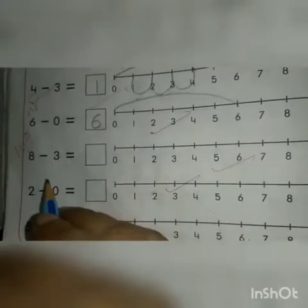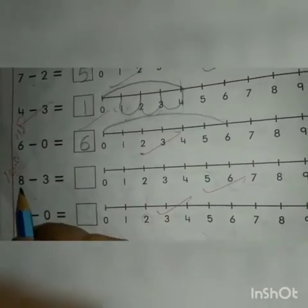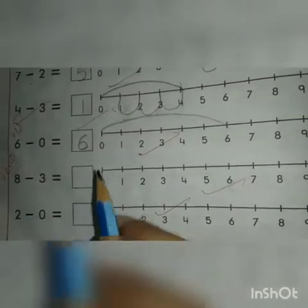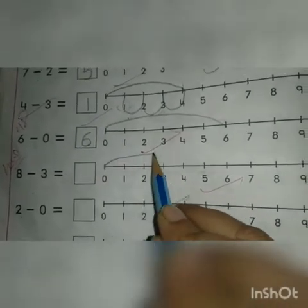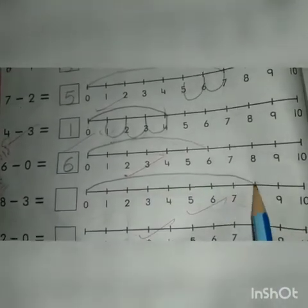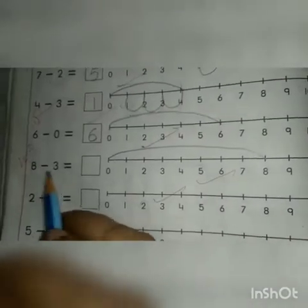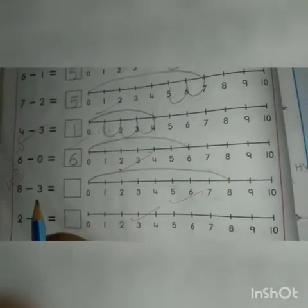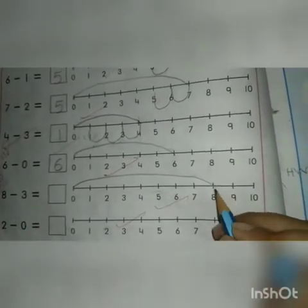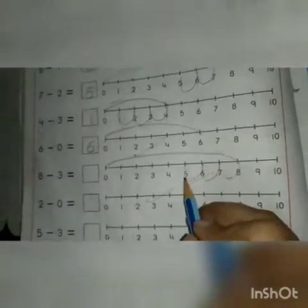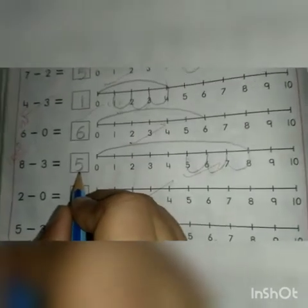Let's go to next line. This is number 8. Now we will go to 8 starting from 0. And this is the sign of minus. And next number is 3. Now we will go three steps back. 1, 2, 3. Where will you stop? At number 5. Yes. Now we will write number 5.